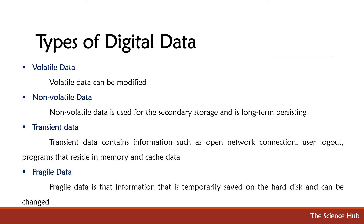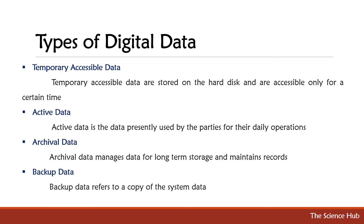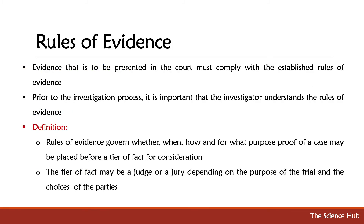Types of digital data: volatile data can be modified. Non-volatile data is used for secondary storage and is long-term persisting. Transient data contains information such as open network connections, user logout programs, residues in memory, and cache data. Fragile data is information temporarily saved on the hard disk that can be changed. Temporary accessible data is stored on the hard disk and accessible only for a certain time. Active data is data presently used for daily operations. Archival data manages data for long-term storage and maintains records. Backup data refers to a copy of the system data.